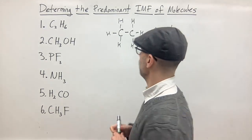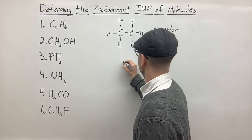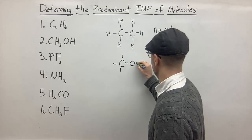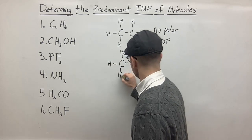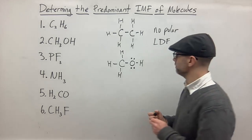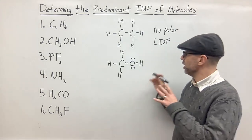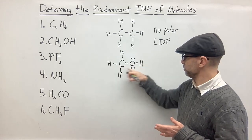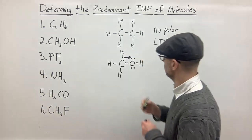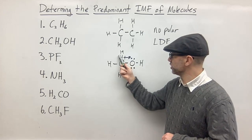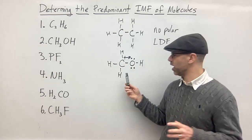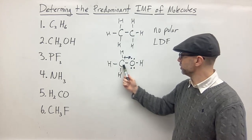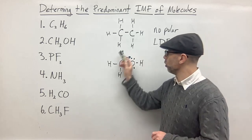What about number two? Let's draw the Lewis dot structure. We have CH3OH: the three hydrogens are bonded to the carbon, and the OH is also bonded to that carbon — so C bonded to three H's and to an O, with the O bonded to an H, and lone pairs on the oxygen. We can see that oxygen is more electronegative than carbon, so there is significant polarity in the C-O bond. The hydrogen-carbon bonds are not very polar, but there's a lot of polarity in the carbon-oxygen bond, so this is definitely going to be a polar molecule.